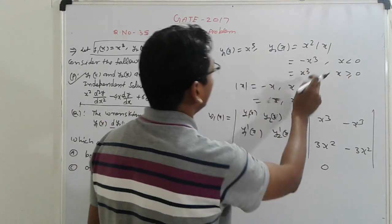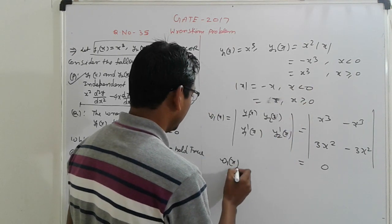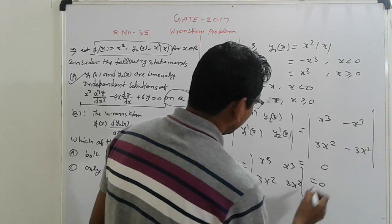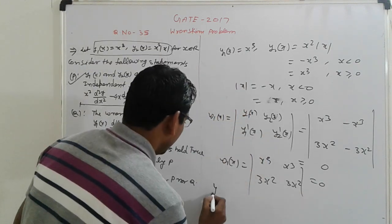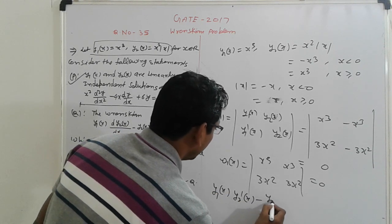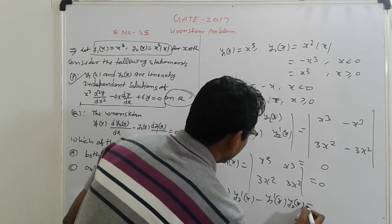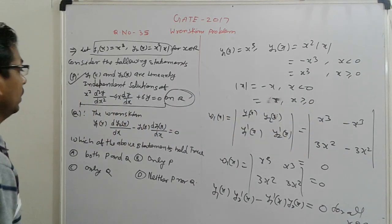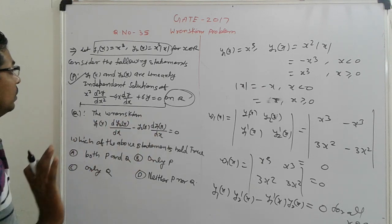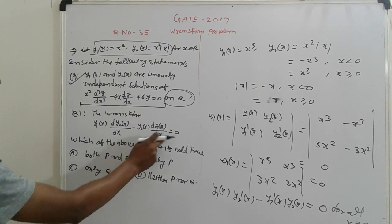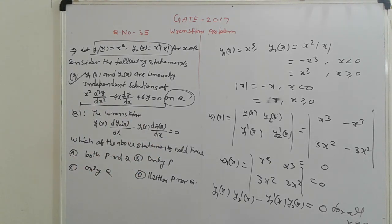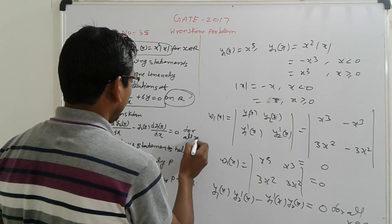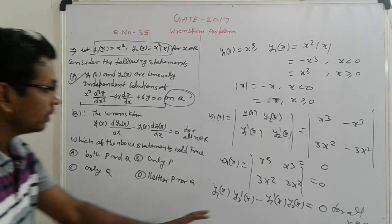Next, all values are positive. W(X) is X³, X³, 3X², 3X². This is also 0. It means, here, this is Y1(X) Y2'(X) - Y1'(X) Y2(X) = 0 for all X belongs to R. Now, where Wronskian equals 0, this is also 0. For all X belongs to R, here, that is 0.